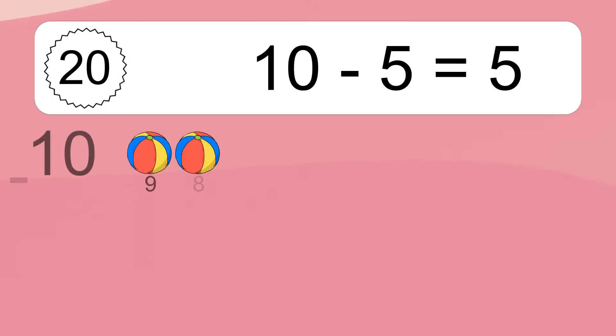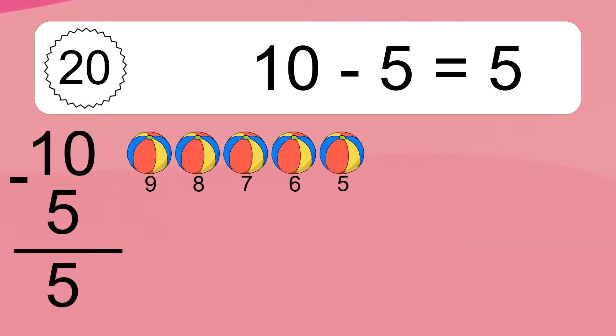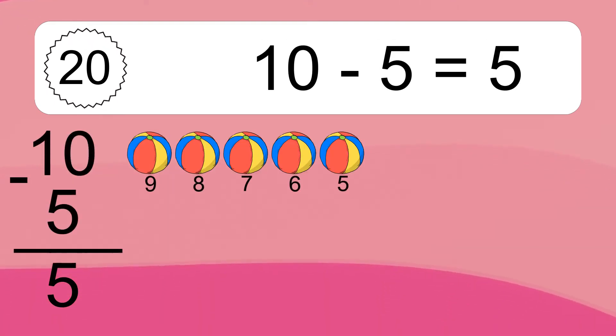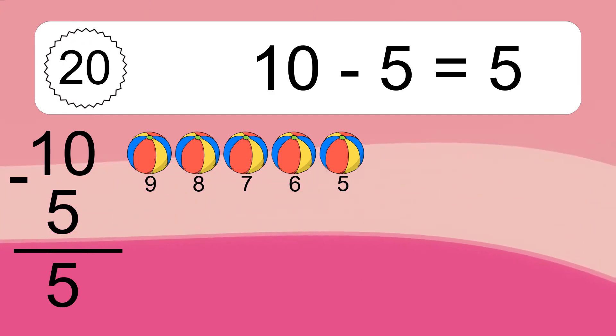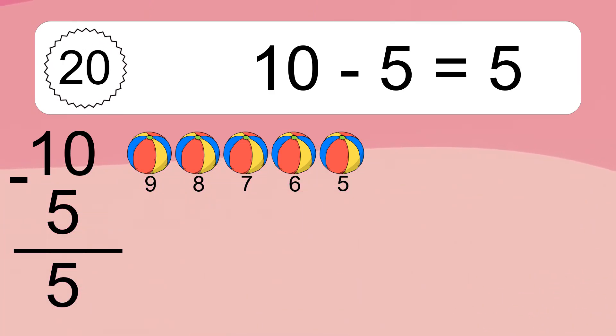10 minus 5 equals what? 10 minus 5 equals 5. Let's count it: 9, 8, 7, 6, 5.